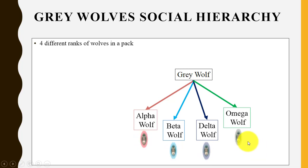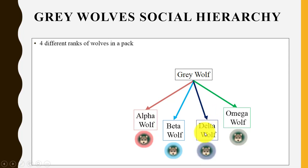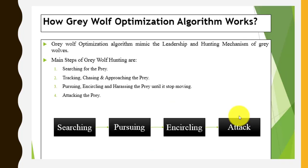We have four different ranks for wolves in a pack: the alpha wolf, beta wolf, delta wolf, and omega wolf. The alpha wolf is the pack leader — it can be male or female — and makes all important decisions regarding hunting, sleeping places, and wake-up time. The beta wolf is the next best candidate to be alpha and helps with decision making. The delta wolf is the third rank and helps the pack in hunting and providing food. The omega wolf is the fourth rank and includes caretakers, older wolves, scouts, and hunters.